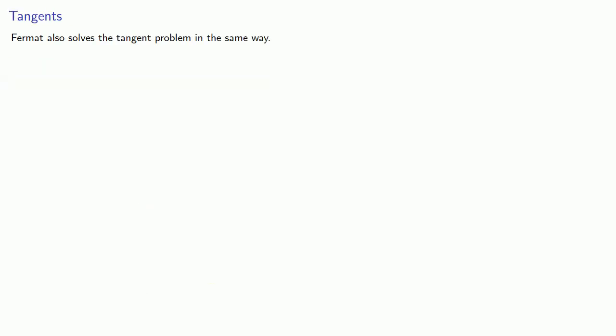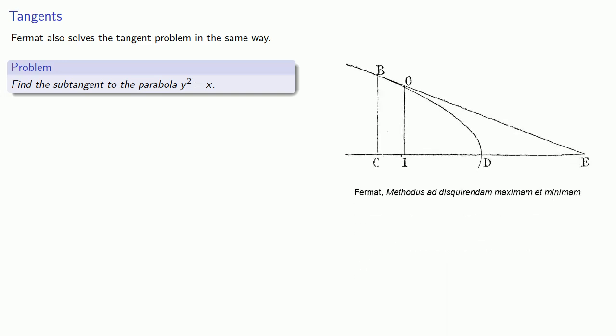Fermat also solves a tangent problem in the same way. In Fermat's terminology, the problem is to find the sub-tangent to the parabola y squared equals x. This term sub-tangent might not be familiar, but we can view this as the line below the tangent.